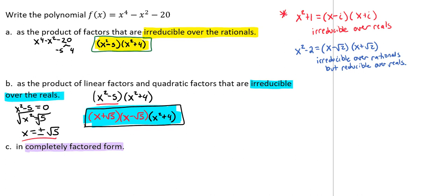Now from here, if we wanted to go to completely factored form, we're going to look at that x^2 + 4. We're going to work on breaking that down.